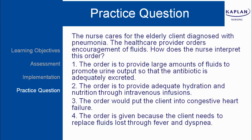Here is your practice question. The nurse cares for the elderly client diagnosed with pneumonia. The health care provider orders encouragement of fluids. How does the nurse interpret this order? Number one: the order is to provide large amounts of fluid to promote urine output so that the antibiotic is adequately excreted. Number two: the order is to provide adequate hydration and nutrition through intravenous infusions. Number three: the order would put the client into congestive heart failure. Number four: the order is given because the client needs to replace fluids lost through fever and dyspnea. Take a moment to see if you can find the right answer.